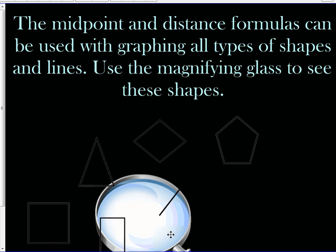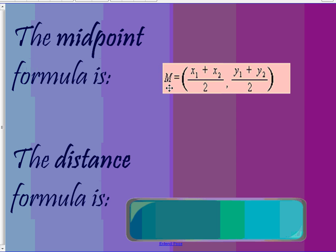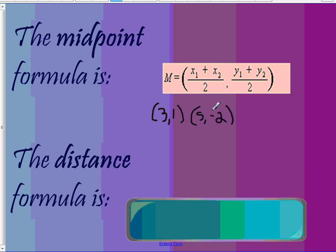The midpoint formula is: M (midpoint) equals the quantity (x1 + x2) divided by 2, comma (y1 + y2) divided by 2. So if you had two points — let's say (3, 1) and (5, -2) — you can plug these points into each spot to solve the formula.